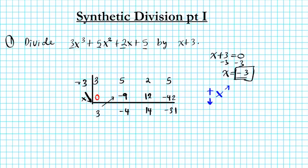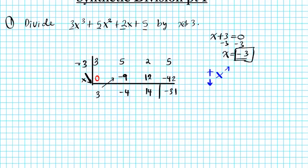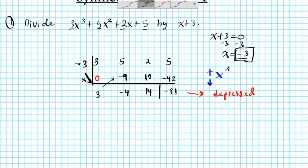You draw a line separating the last term. Now this right here is known as the depressed polynomial. The name of this result you have right here is the depressed polynomial. The reason it is depressed is because it has lost one factor of one degree. So it's always one degree less than whatever you started with. So when I want to write down my answers, I just take 3. Instead of x³ it has lost a factor. So it's going to be 3x²